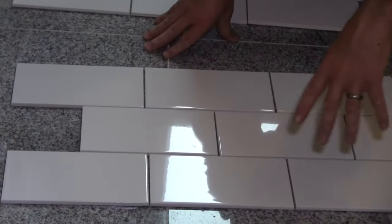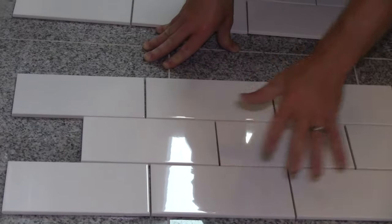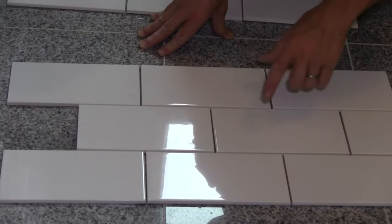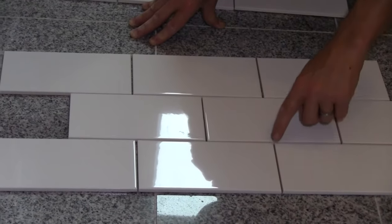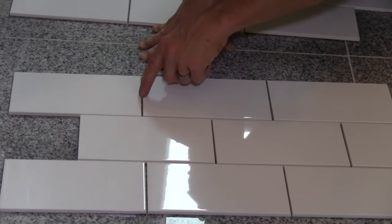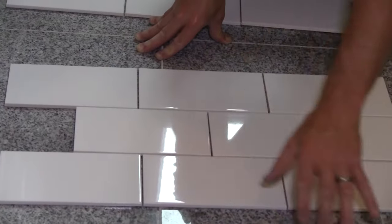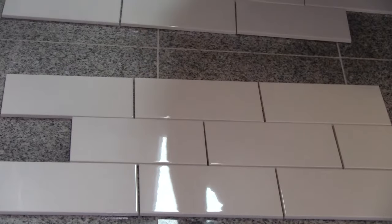Down here we have our half staggered. Every other tile is halfway onto the one before, and you'll see that the grout lines line up every second row. So it's boom, boom, boom, boom all the way down, and your whole wall will look like that. A real simple design, works really well. Most people like that.